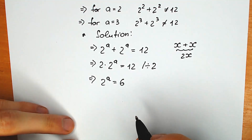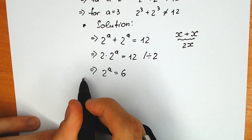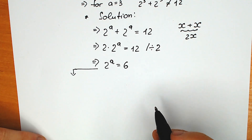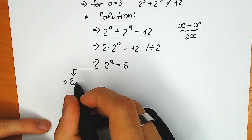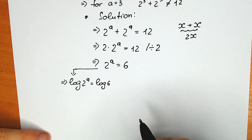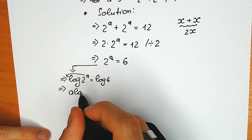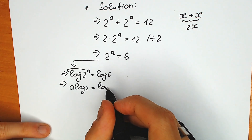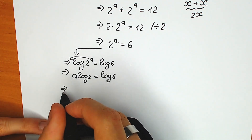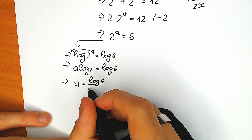So 2 to the power a is equal to 6. Now, how can we find our a? I want to apply log on both sides. So we have log of 2 to the power a equal to log 6. According to a basic log property, this a will come down. As a result we have a times log 2 equal to log 6. We divide both sides by log 2, and as a result we have a equal to log 6 over log 2.